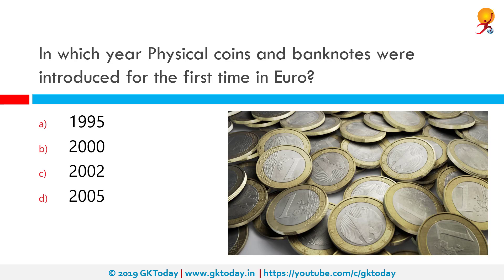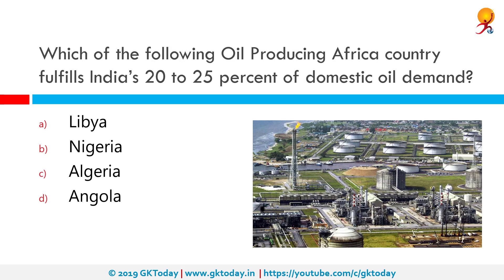In which year were physical euro coins and banknotes introduced for the first time in Europe? The correct answer is 2002. Physical euro notes and coins began circulating in the euro area, or eurozone, on 1st January 2002. There are seven euro banknotes and eight euro coins.